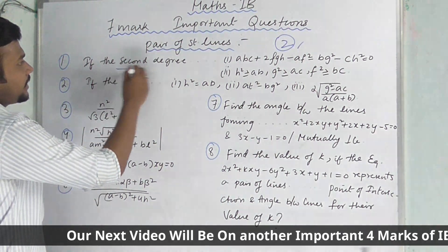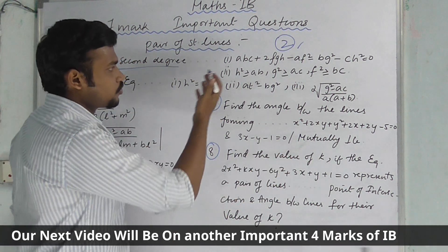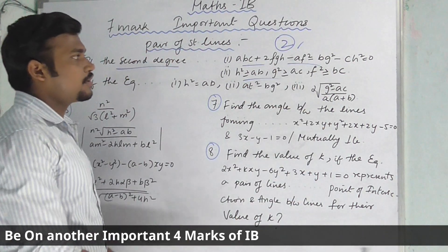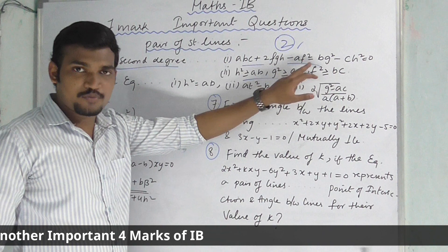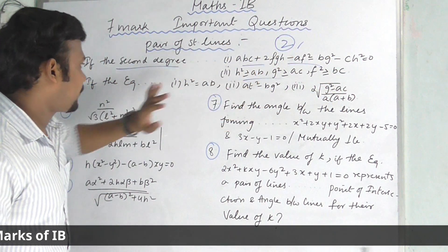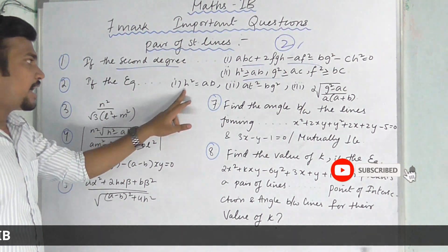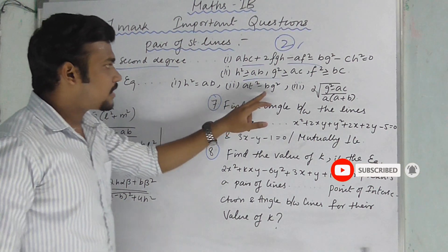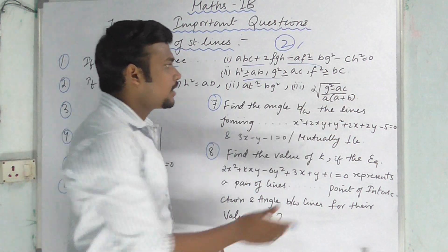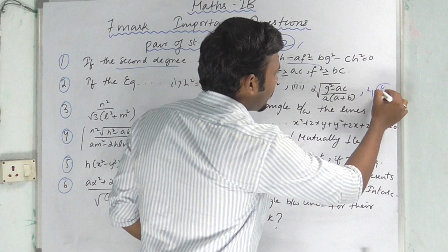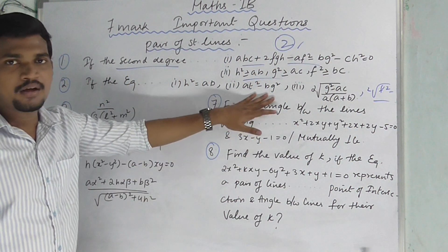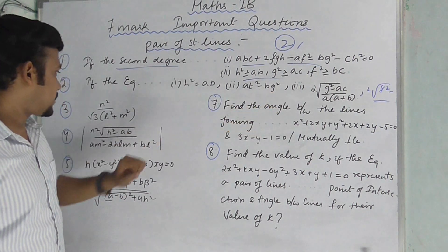So let's look at that. For the second-degree equation problem-wise, the key theorem is: abc + 2fgh − af² − bg² − ch² = 0. That is the theorem. And the condition for a random pair of lines is also a question. Next, the angle between the lines formula: the equation involves x² terms and the expression 2√(g² − ac) / (a + b).